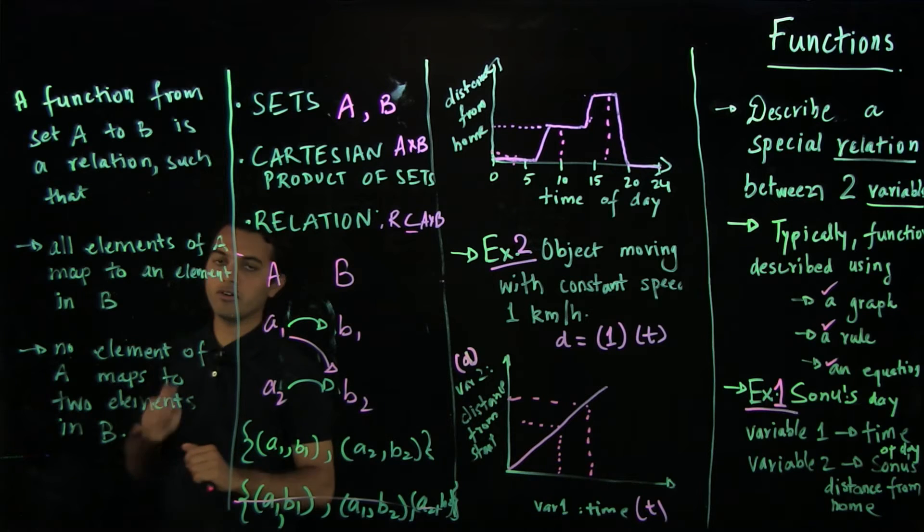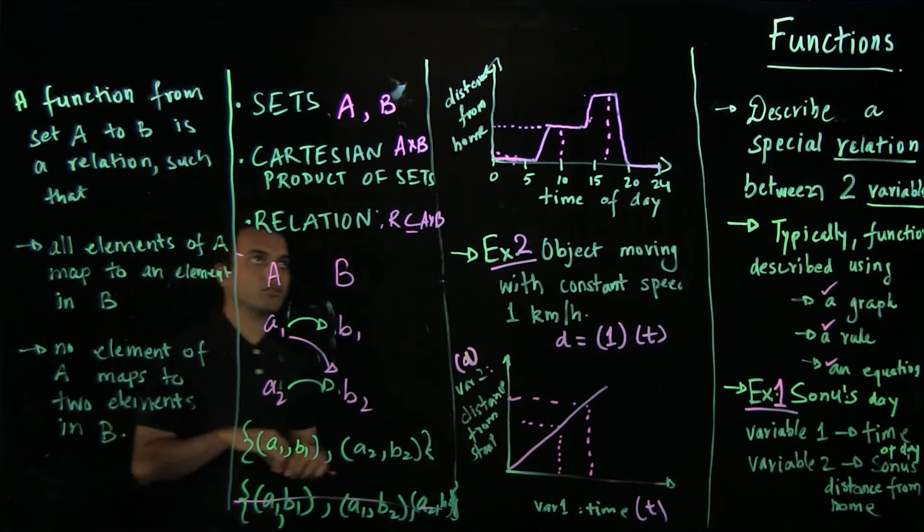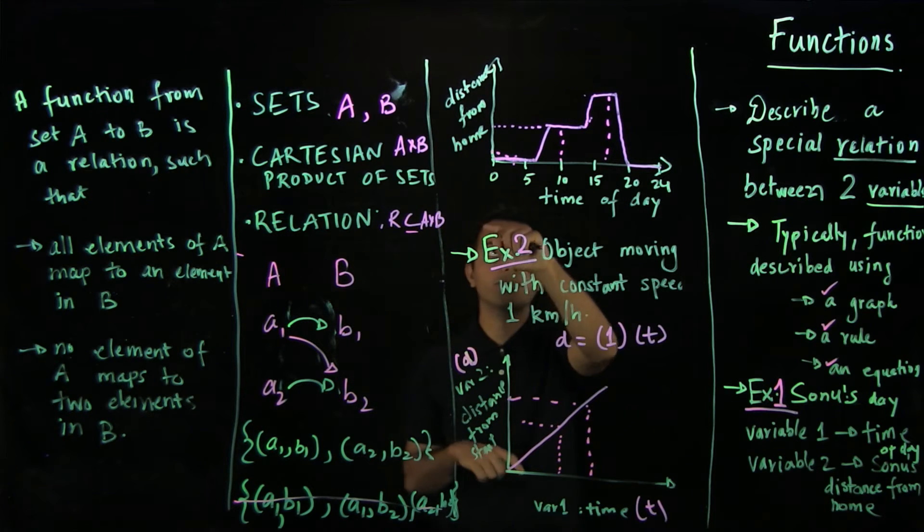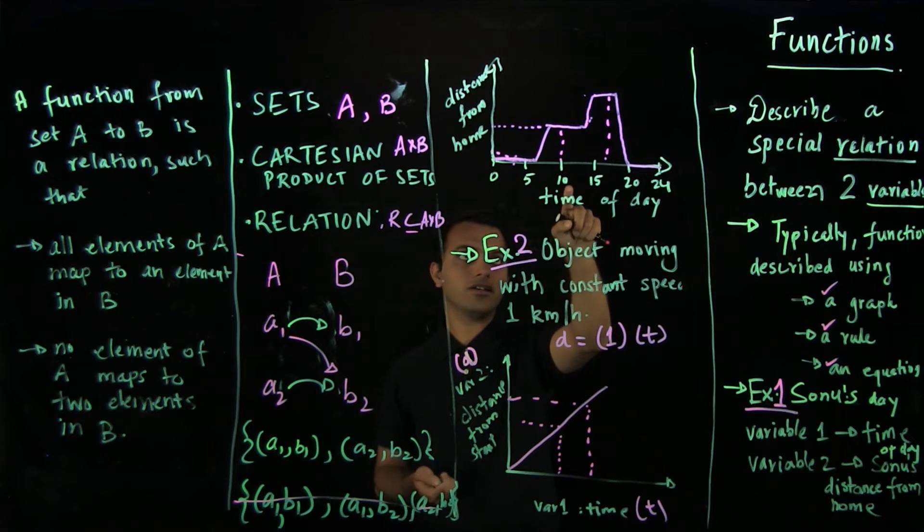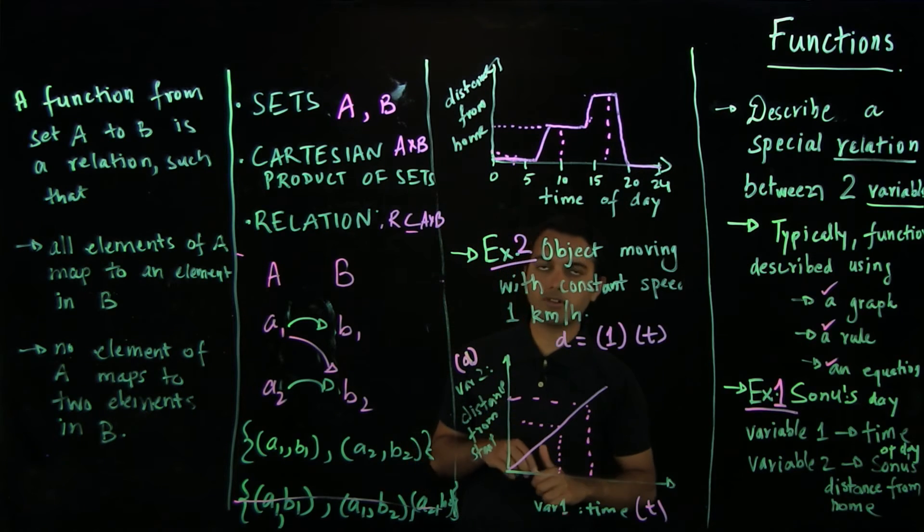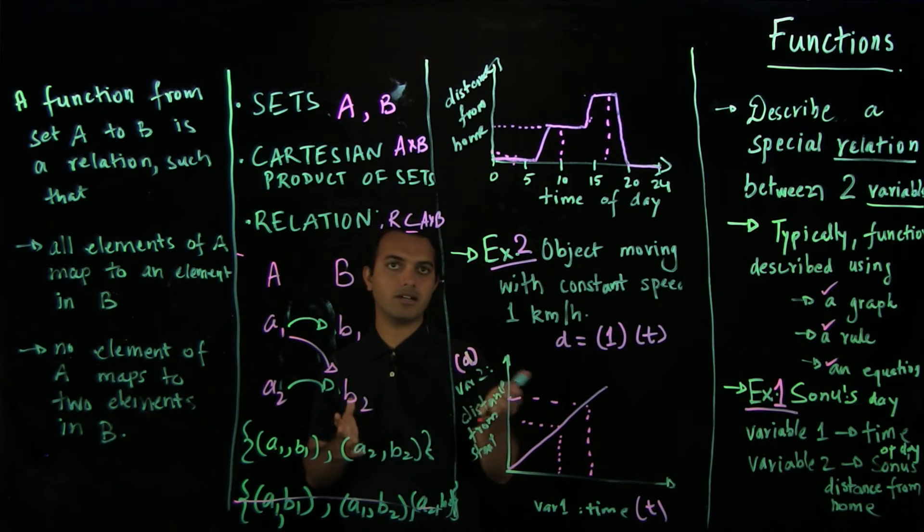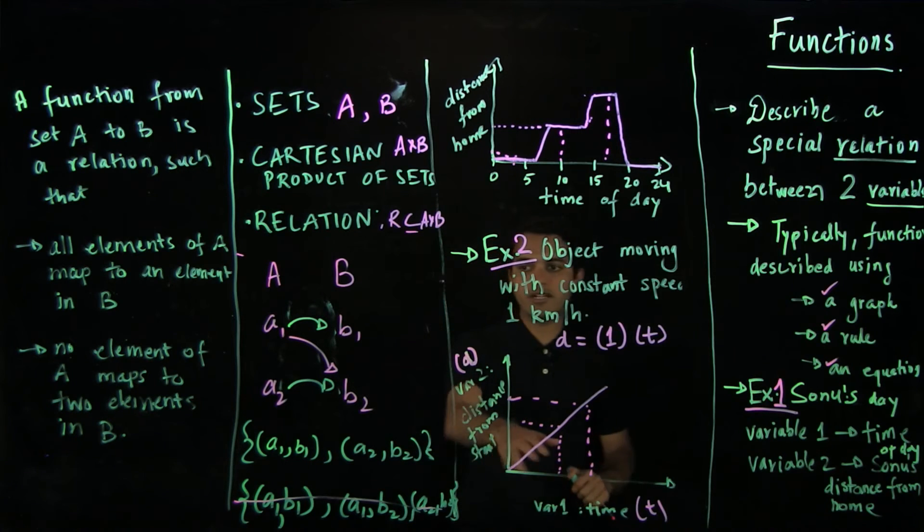And the other thing is, for no two elements in set A, we have two output variables. So it cannot be possible that Sonu at 10, 10 a.m. in the morning is at two places. So there is only one place where Sonu can be. So the distance from home for Sonu at 10 a.m. will be only one point. And similarly for these examples.